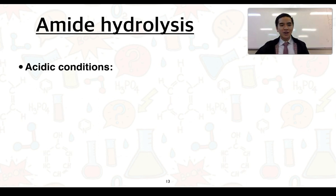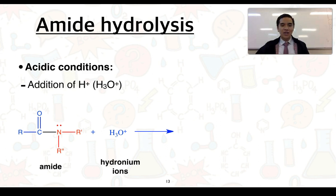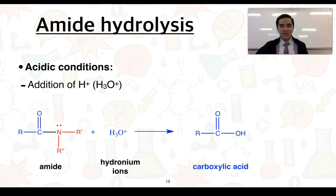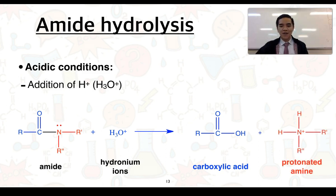Under acidic conditions, this occurs in the presence of hydrogen ions or hydronium ions. You're not expected to write equations, but the equation shows the amide reacting with hydronium ions. The carbon-to-nitrogen bond breaks. To the left, under acidic conditions, we get a carboxylic acid. To the right, because it's under acidic conditions, we get a protonated amine. This goes back to our work in 3.6 on amines, where we found that amines can accept protons in acidic conditions, as amines are weak bases.